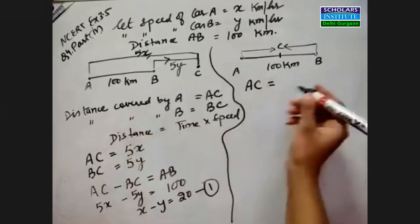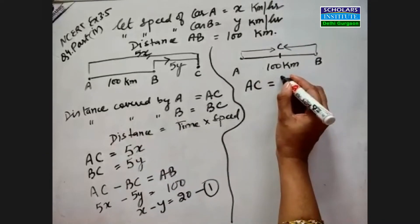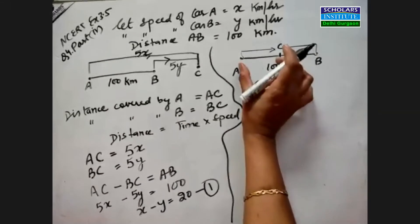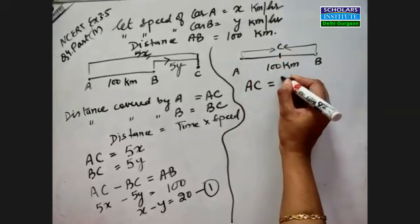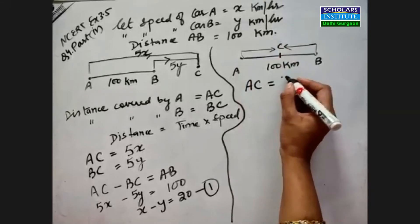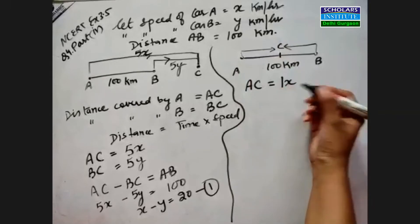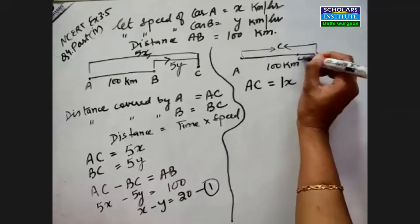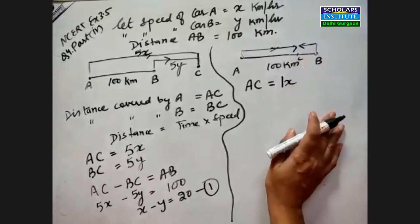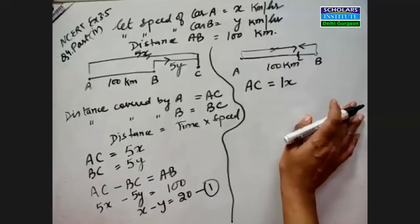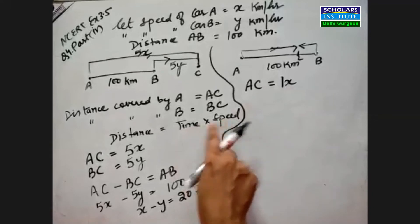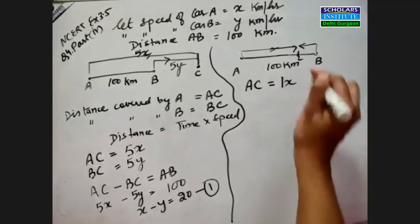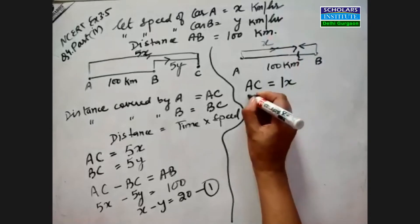Now tell me, how much will AC be? AC is distance, which means speed into time. The time is 1 hour and speed is x, so AC equals 1 into x, which is x. I'm not taking 100 kilometers as the distance - that's the total AB. The meeting point C could be at 75 km and 25 km, not necessarily half. BC equals 1 times y, which is 1y or just y.